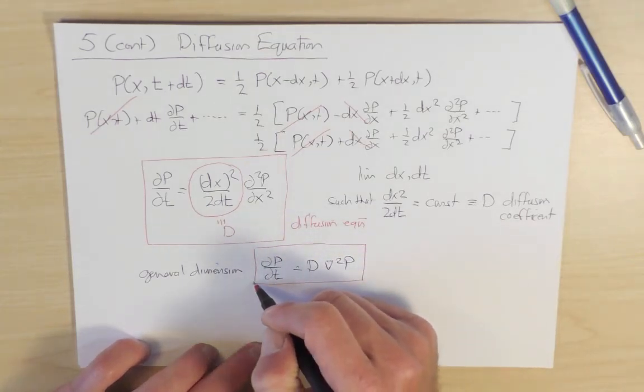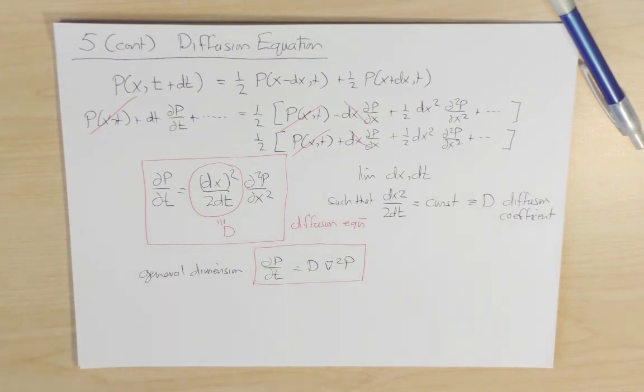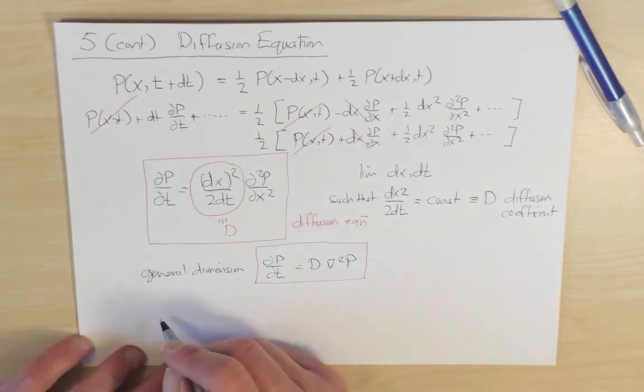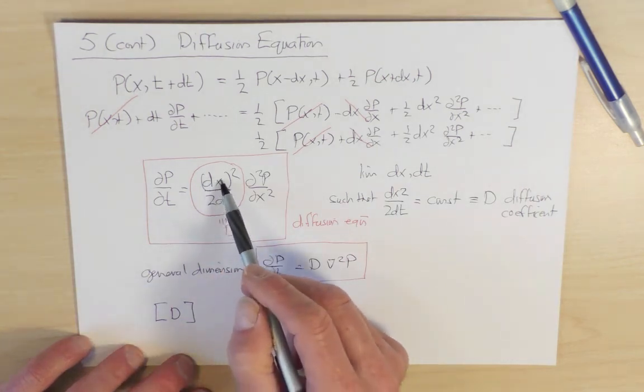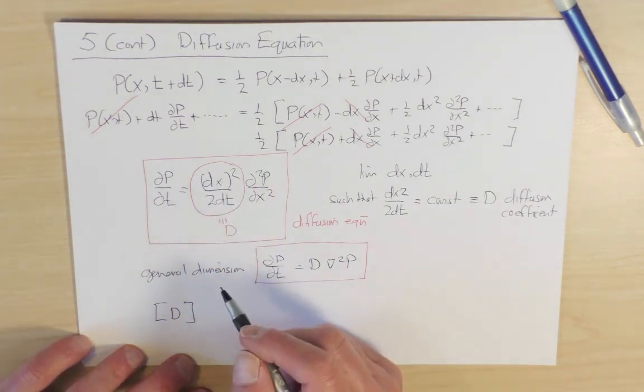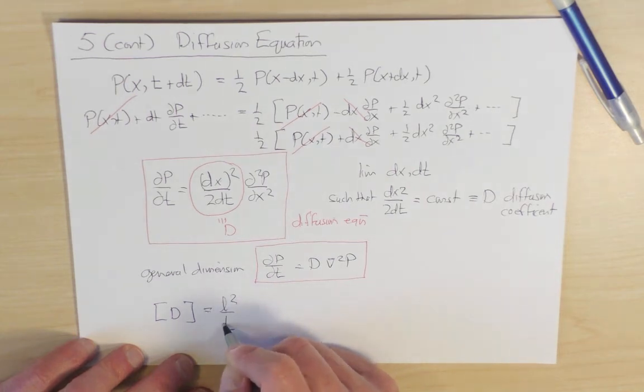There's two important points that I want to emphasize about the diffusion equation. First of all, just in terms of dimensional analysis, the units of the diffusion coefficient D. By construction, there's two powers of length upstairs and a power of time downstairs. So the units are L² over t. So important point number one.